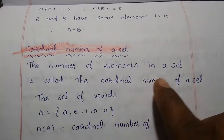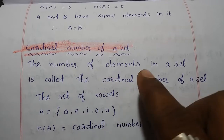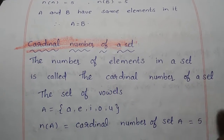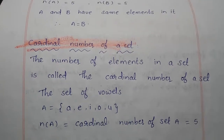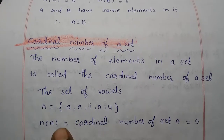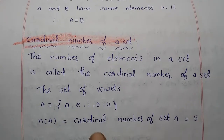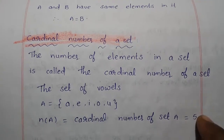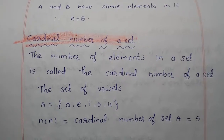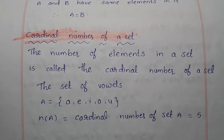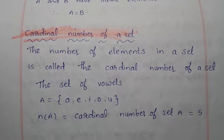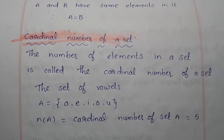The cardinal number of a set: the number of elements in a set is called the cardinal number of that set. For the set of vowels {a, e, i, o, u}, n(A) = 5, so the cardinal number of set A is 5. How many elements are present in a set — that number is called the cardinal number of the given set. Thanks for watching.